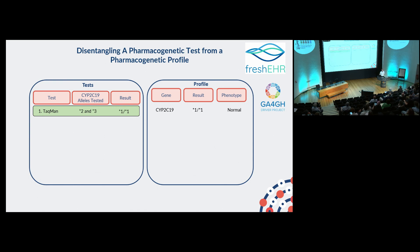A patient might present wanting CYP2C19 genotyping, and at first they have a TaqMan assay — looking at just two variants in CYP2C19 — and they're found to be wild type. They don't carry any of those variants. So within their profile, they're a normal metabolizer: star 1, star 1.